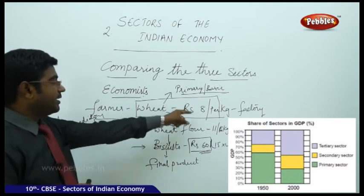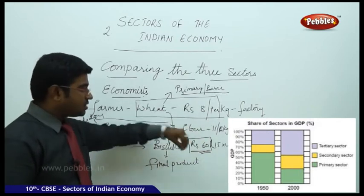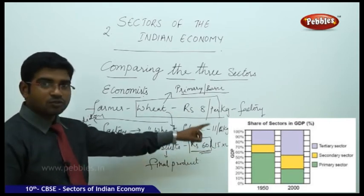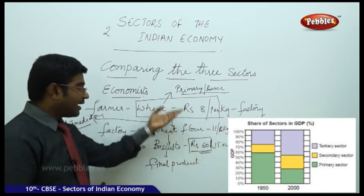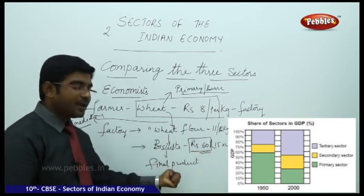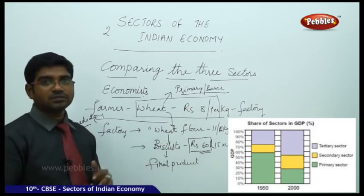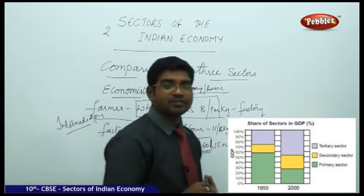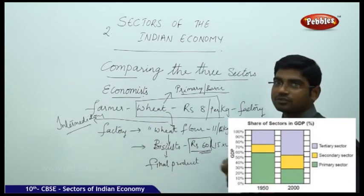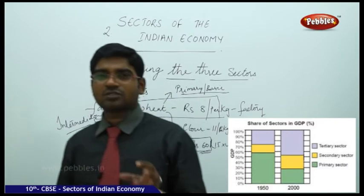We cannot add Rs. 8 and Rs. 11 and then come to Rs. 60, because the same wheat sold for Rs. 8 changed shape and became wheat flour sold for Rs. 11 — the Rs. 8 is already intermingled in Rs. 11. Again, wheat flour was transformed into biscuits sold for Rs. 60. The final value combines the basic and intermediary product costs. That's how we make the final estimation: only the final product's cost is counted.